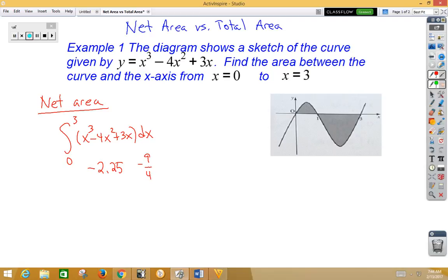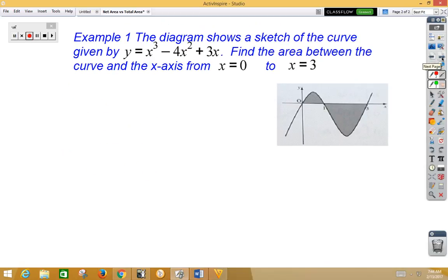Now let's take a look at total area. If I want to do total area, now I need to be concerned about possible negative area. So, on a calculator, we can go 0 to 3, and we must insert absolute value bars for x cubed minus 4x squared plus 3x.